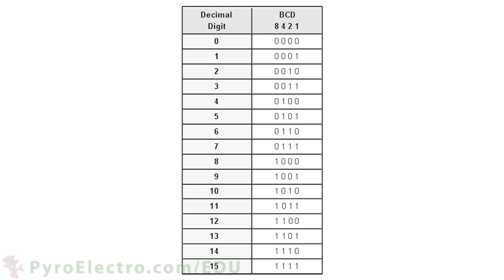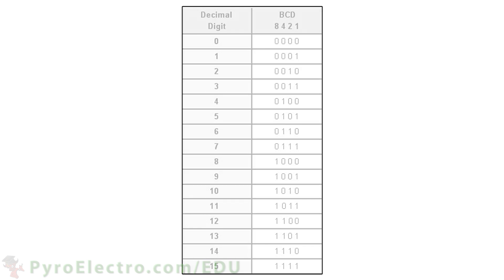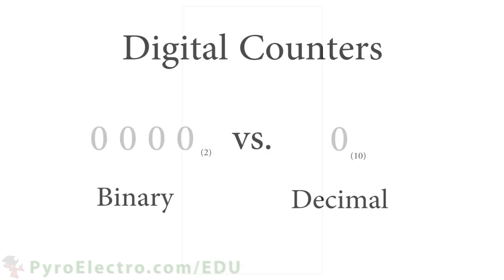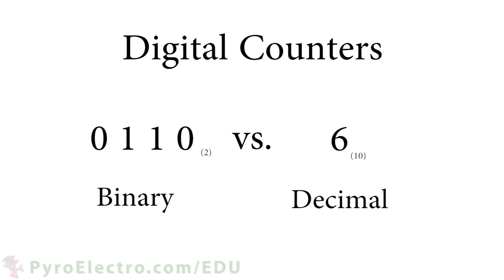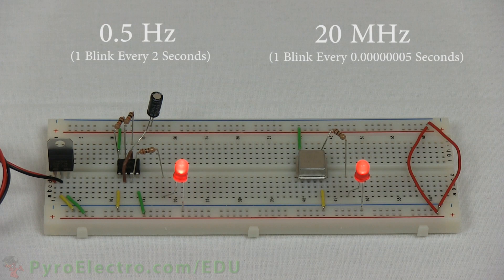That means it counts from 0 to 15 in decimal. The clock input to our counter, telling it when to count, will be our slow 555 timer circuit so we can watch all the changes occur. And if you're curious, you can always swap in the faster crystal oscillator to see what happens.